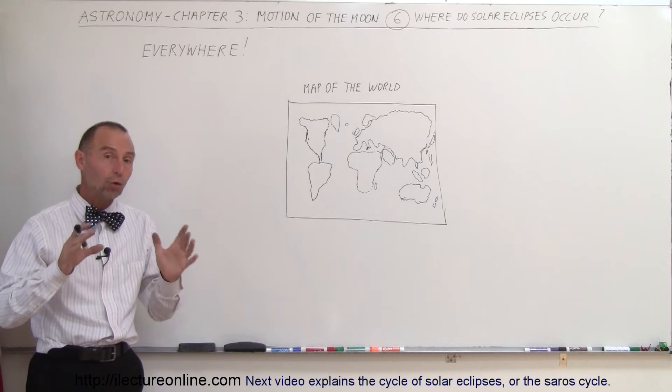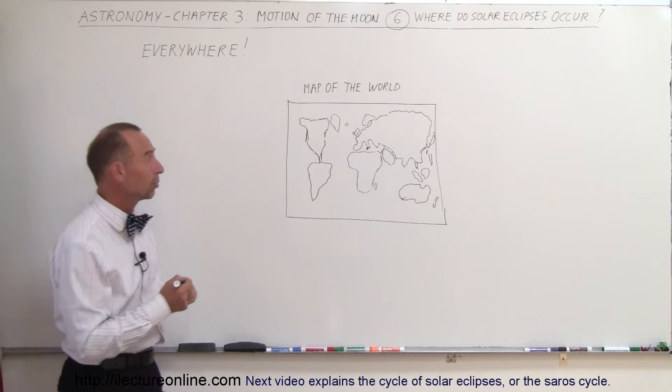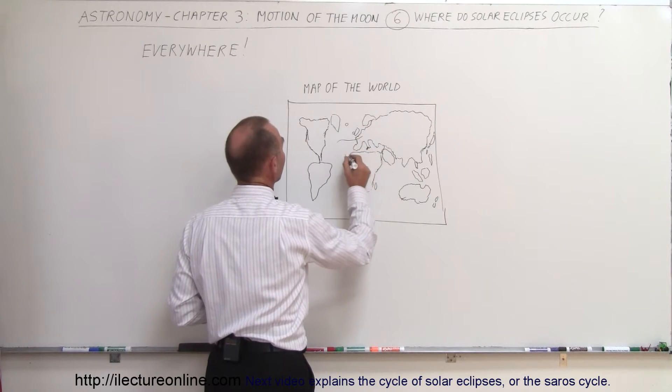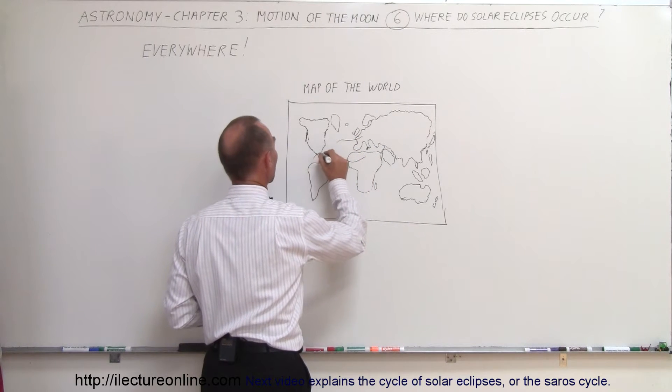And we're talking about total solar eclipses or annular solar eclipses. So for example, there may be a solar eclipse here one day, and then there may be another one over here, and another one over there.